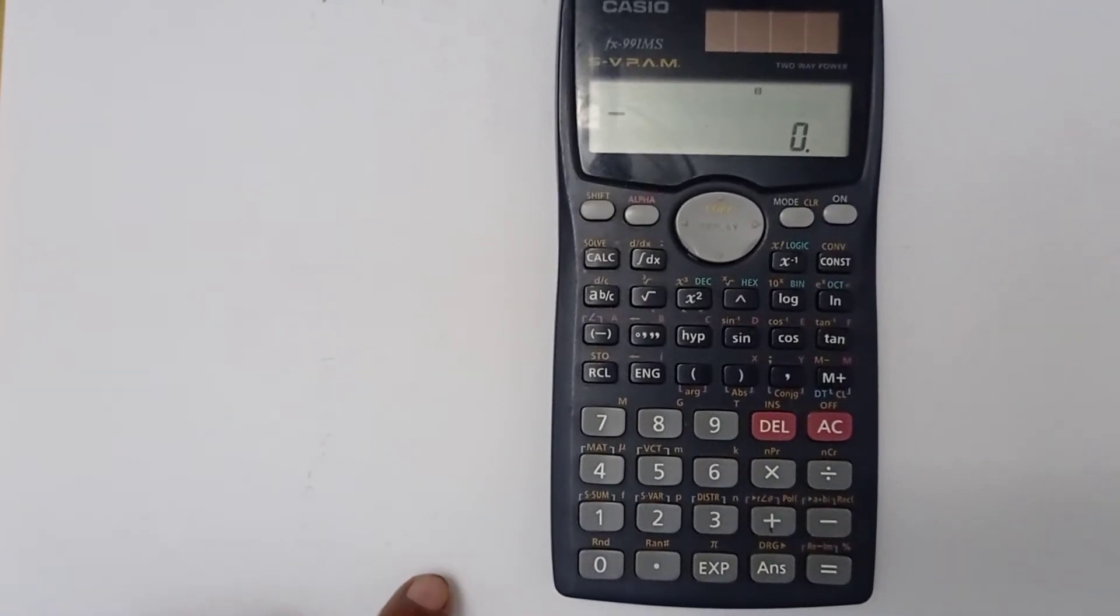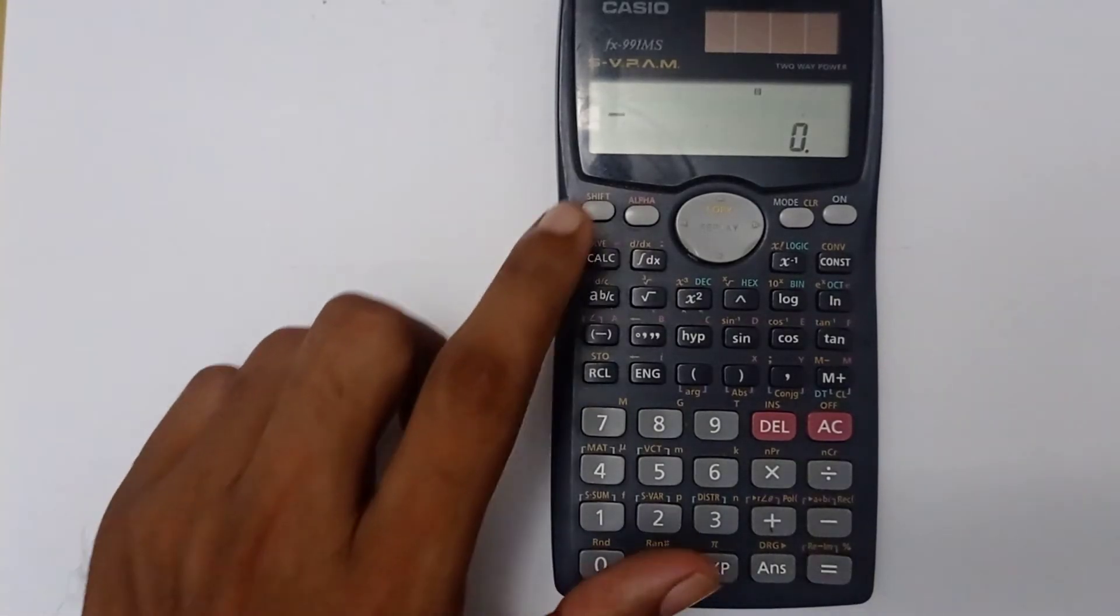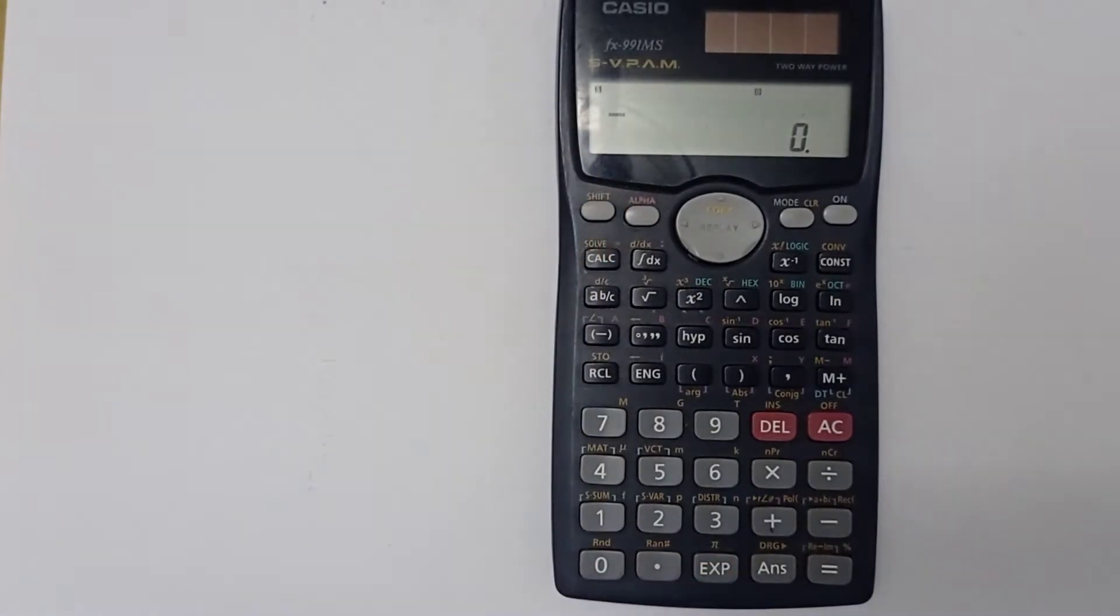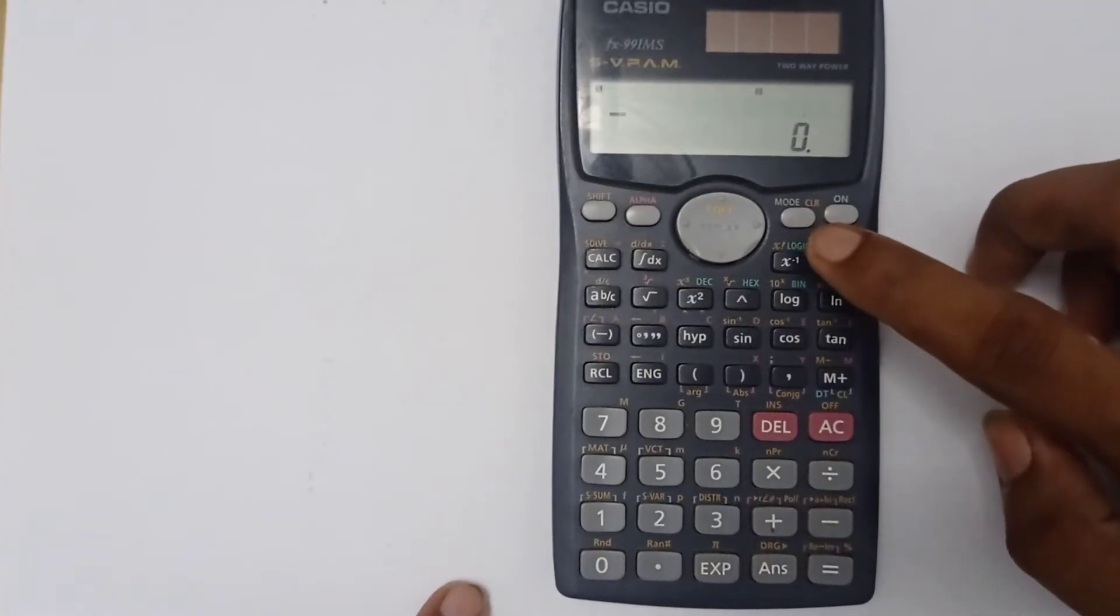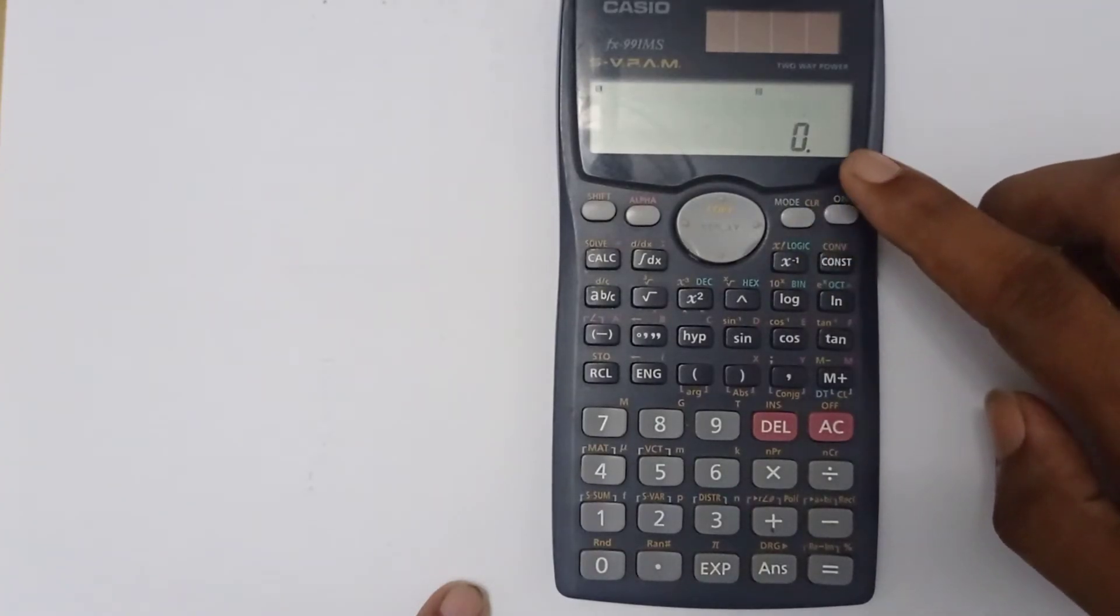Today I'll show you how we can reset this Casio FX-991MS calculator. To reset the calculator, first you have to press this shift sign, then you have to press this mode. Here you can see that CLR or clear is written in orange color, so press it.